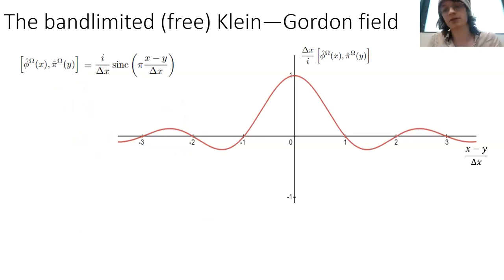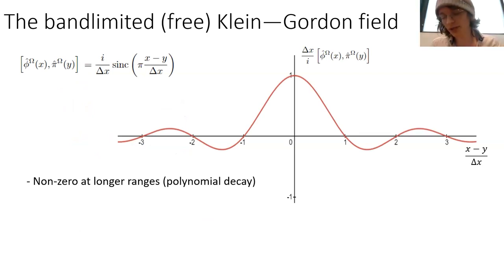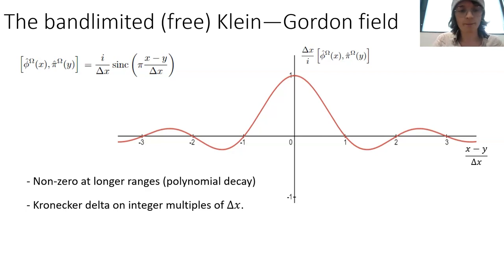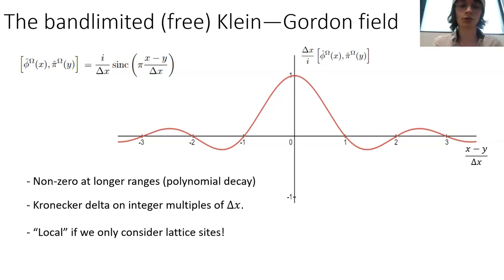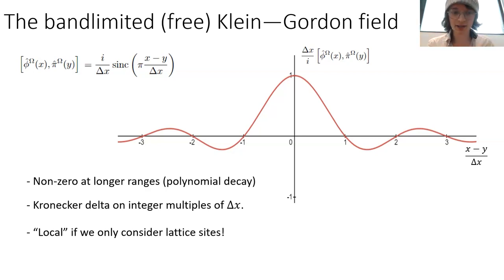If we introduce a UV cutoff, the creation and annihilation operators themselves aren't changed — the only thing affected is the range of k over which they can exist. It can only create and annihilate particles up to a certain maximum momentum. Consequently, the commutation relation becomes a sinc function as opposed to a Dirac delta, but if we take the limit of omega going to infinity, we recover that Dirac delta commutator. If we consider only the lattice sites of the field — the samples at lattice spacing delta x determined by the UV cutoff — we get a local theory, or at least local commutation relations.